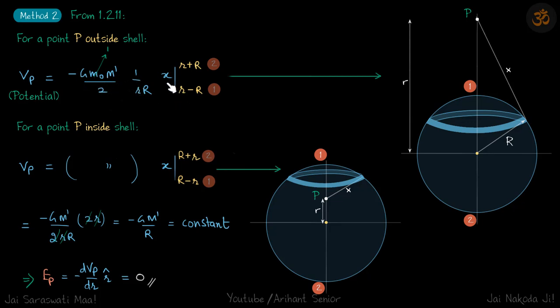Minus G m dash by 2, 1 by R, R times x, and limits of x was from R minus r to R plus r, from this point 1 to point 2. That was the limit of x. If you have any doubt about that, please visit this problem, then this thing will be pretty clear.